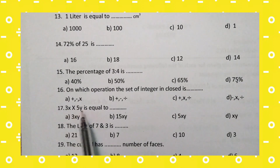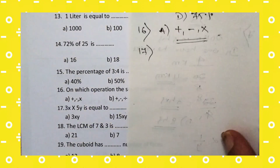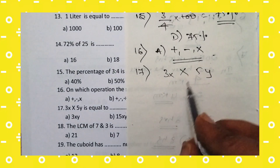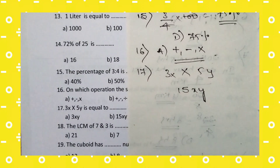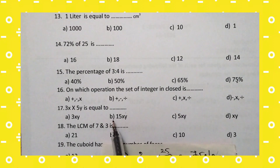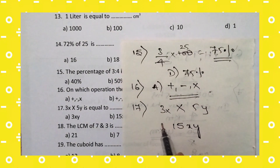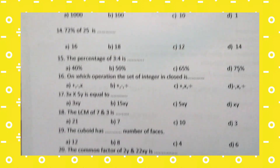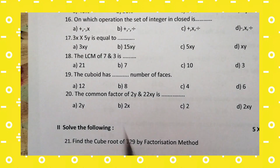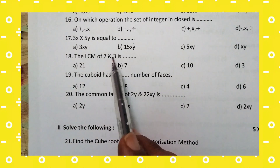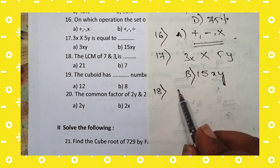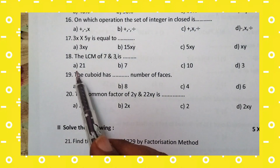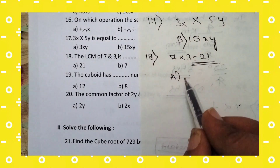17th question: 3x multiplied by 5y. Multiply the coefficients: 3 times 5 equals 15. Multiply the variables: x times y equals xy. So 3x into 5y equals 15xy. Option B — 15xy — is the right answer for the 17th question. 18th question: the LCM of 7 and 3. The LCM of 7 and 3 is 21. Option A — 21 — is the answer for the 18th question.